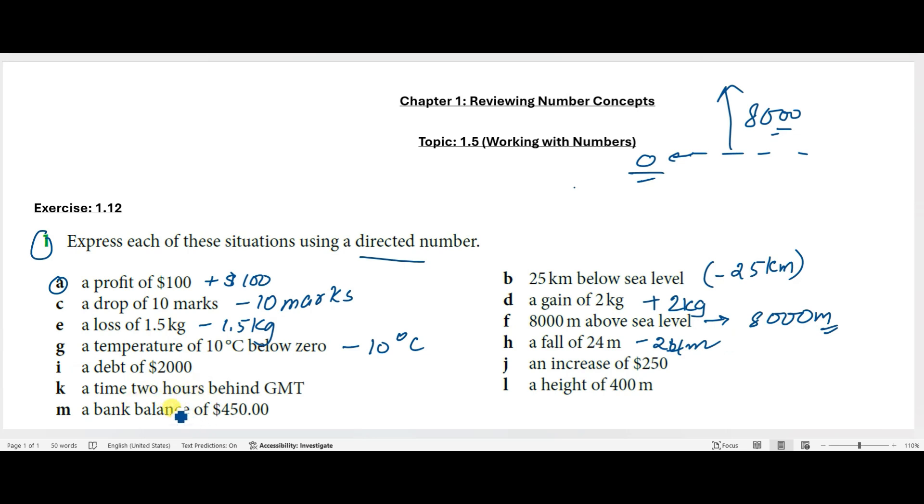A debt of $2000—debt means it's going to be -$2000. Next we have an increase of $250—increase means it's a positive sign, so +$250. Next we have a time two hours behind GMT, so we can write -2 hours.